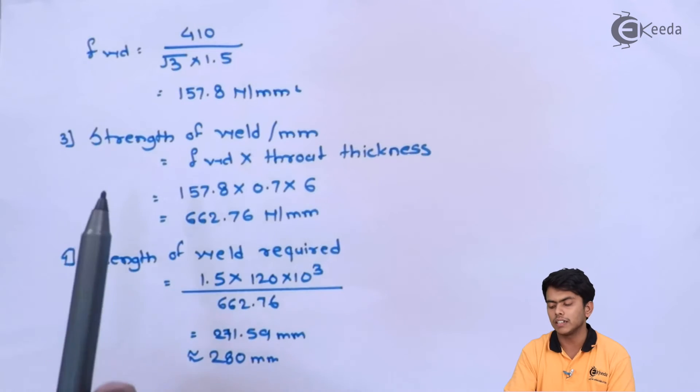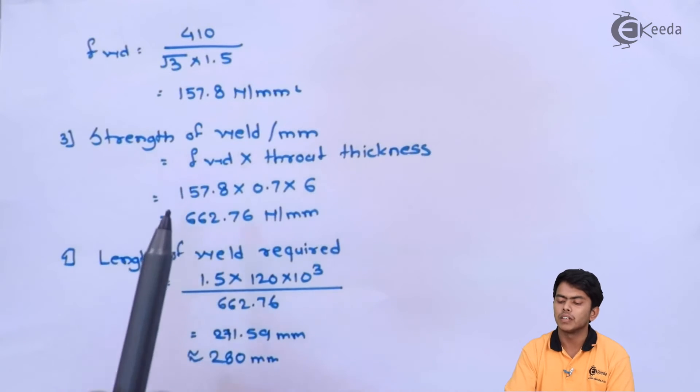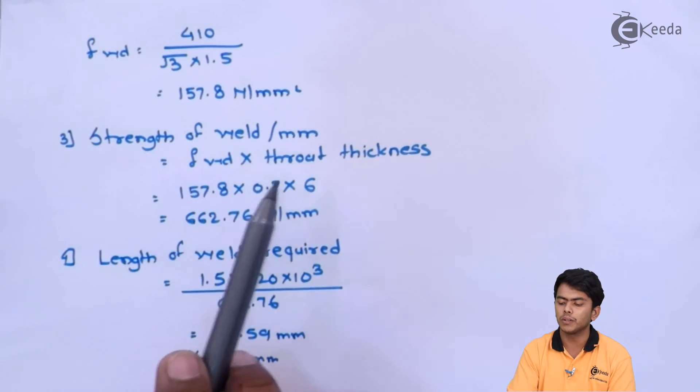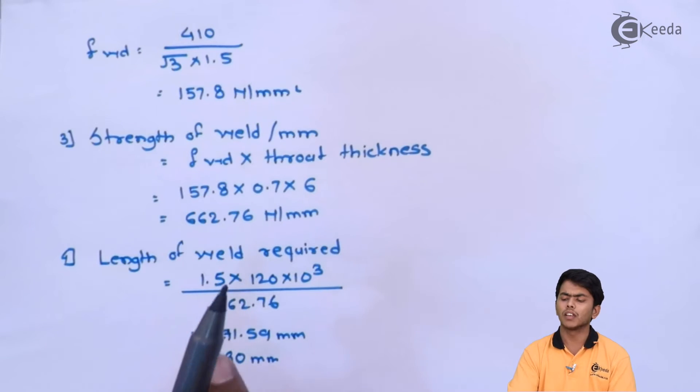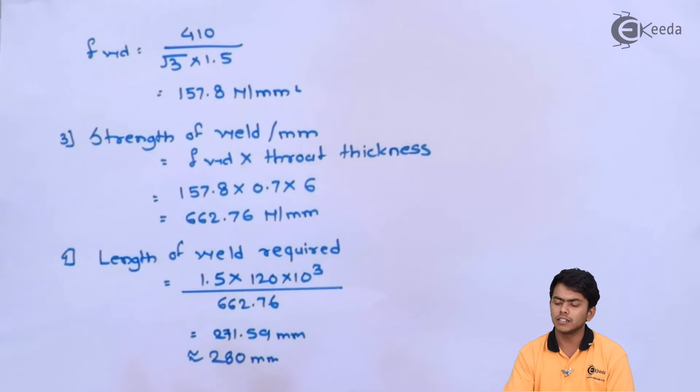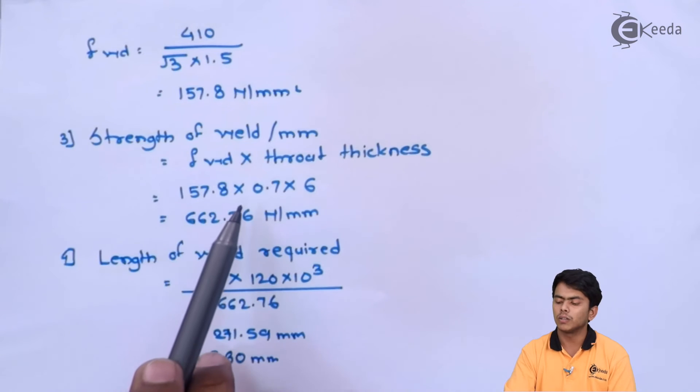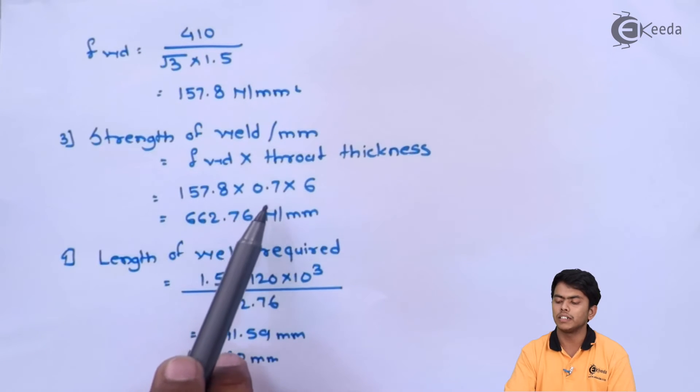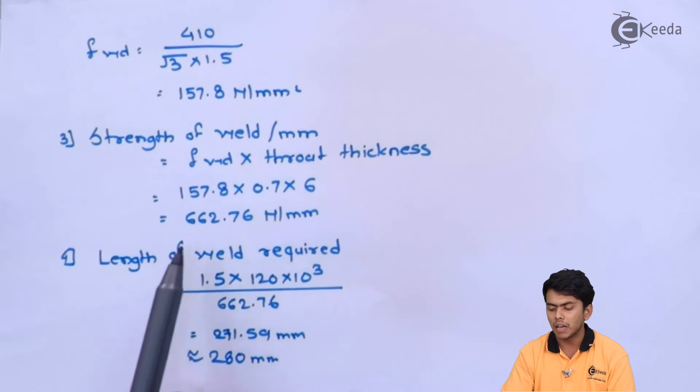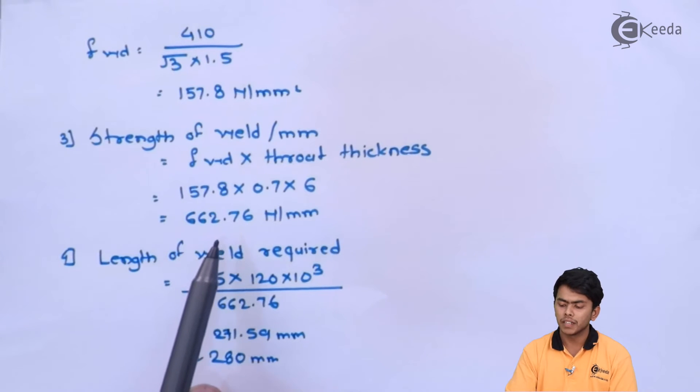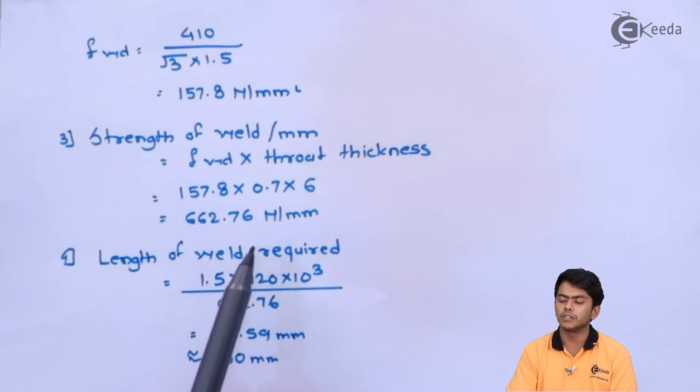Then we have to calculate strength of weld per mm, which is nothing but FWD into throat thickness. Throat thickness is 0.7 times the size of weld. So we will take FWD which is 157.8 N/mm², then throat thickness which is 0.7 into size of weld is 6. We get 662.76 N/mm.